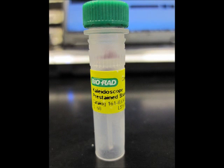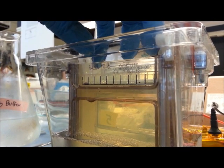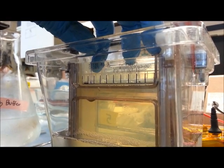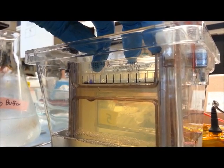Using a gradient gel, load lane one with kaleidoscope markers. Kaleidoscope markers are like molecular weight markers but the proteins are bound to colored dye so when the gel runs you will be able to see the markers with the naked eye. Load your prepared samples into all other lanes except for lane 6.